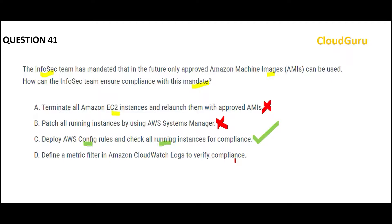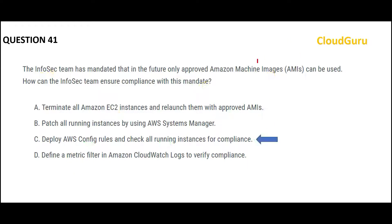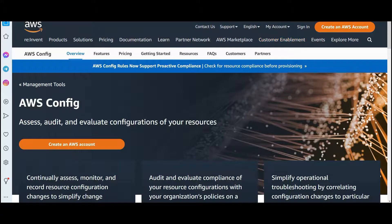Once you have that list, you can decide what to do — but the number one job is to first identify which ones have the problem. CloudWatch logs are not used to understand if an AMI is approved or not. CloudWatch logs are used for metrics like CPU utilization and RAM usage. A metric filter will not work at all — that is the wrong choice of product. AWS Config is my final answer.